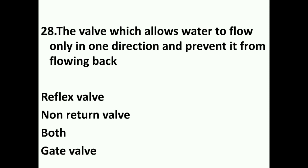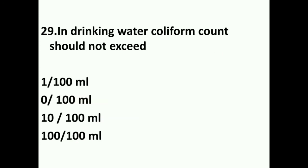The valve which allows water to flow only in one direction and prevents it from flowing back is both the reflex valve and the non-return valve. Gate valve and sluice valve are not one-directional; they control the entry of water to a particular section of pipe.